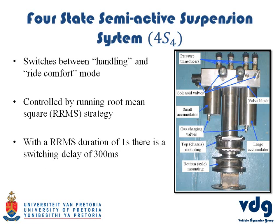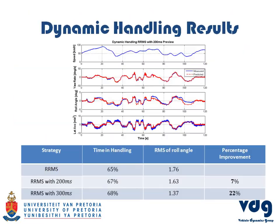The suspension system that was presented earlier this morning switches between handling and ride comfort modes. Currently it is controlled by a strategy called the Running RMS strategy, which has a timed switching delay of about 300 milliseconds. The Running RMS uses the measured vertical acceleration and measured lateral acceleration. We are getting rid of the delay by now using the measured vertical acceleration combined with the predicted lateral acceleration instead of the measured lateral acceleration.